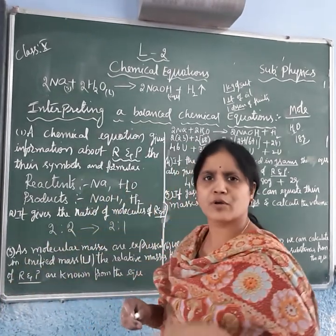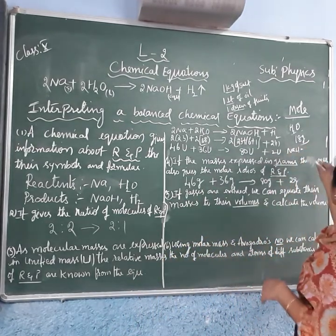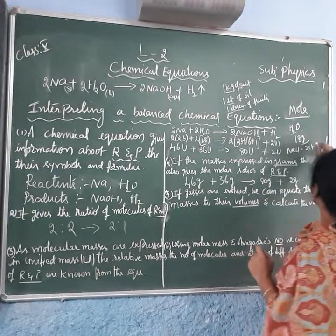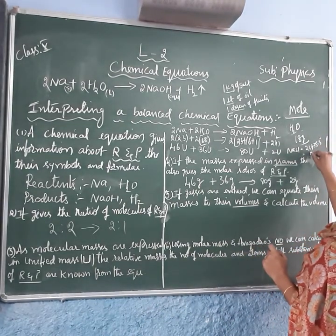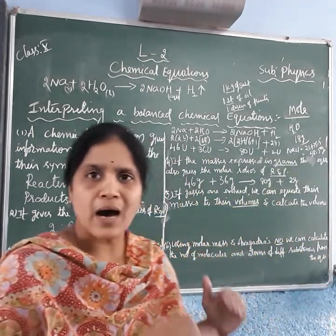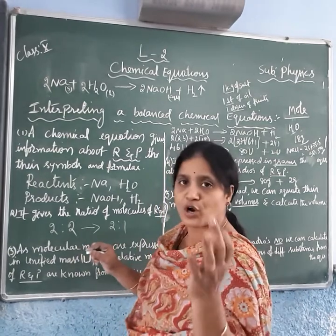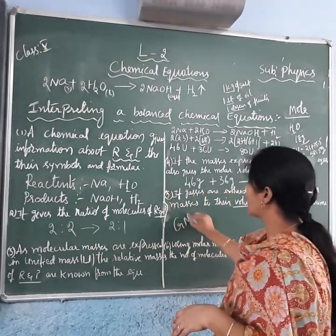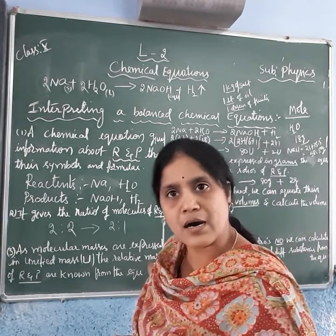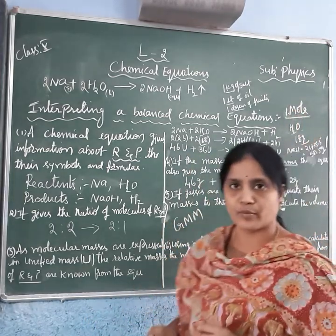If you take sodium chloride (NaCl): sodium is 23 and chlorine is 35.5, giving 58.5 grams. This mass, when measured in grams for one molecule of any substance, is called the Gram Molecular Mass (GMM), and that is known as one mole.